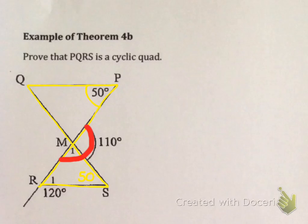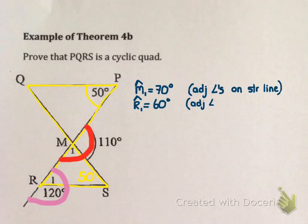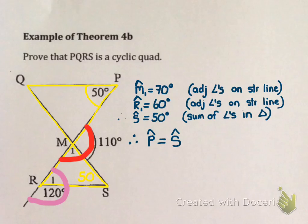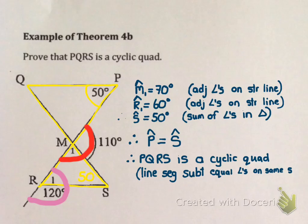Well, this isn't a problem because immediately I see that angle M1 and 110 degrees lie on a straight line. This means that angle M1 must be 70 degrees because of adjacent angles on a straight line. Similarly, angle R1 and 120 degrees lie on a straight line, so angle R1 is 60 degrees for the same reason. Now I have two angles in the triangle. Therefore I can find the value of S. 180 degrees minus the 70 and the 60 gives me 50 degrees, with reason sum of angles in a triangle. This is great because this means that angle P and angle S are equal. Which means, according to Theorem 4b, PQRS is a cyclic quad, with reason line segment subtends equal angles on the same side.